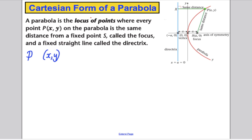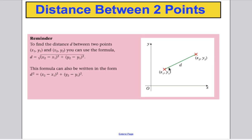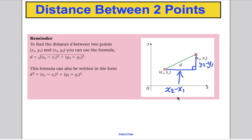Just before the algebra, a reminder: to work out the distance between two points (x₁, y₁) and (x₂, y₂), you use Pythagoras' theorem — the difference in x's squared, plus the difference in y's squared, then square root. Or if leaving it as distance squared: (x₂ minus x₁)² plus (y₂ minus y₁)². That's the idea I'm going to use here.